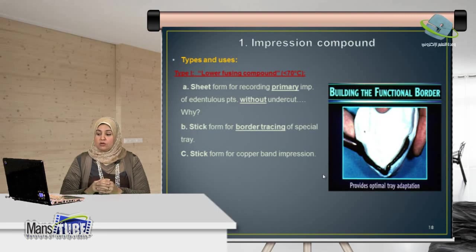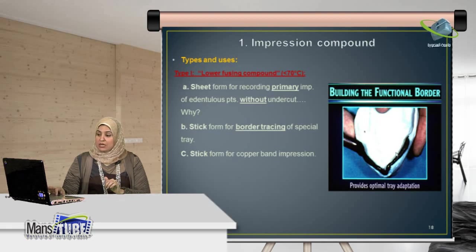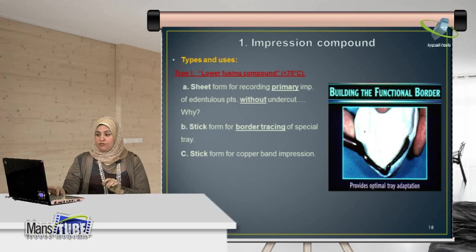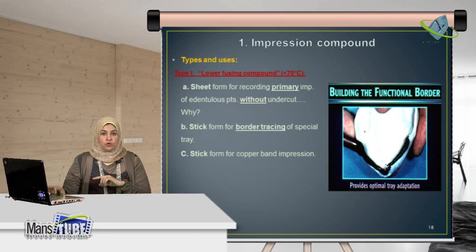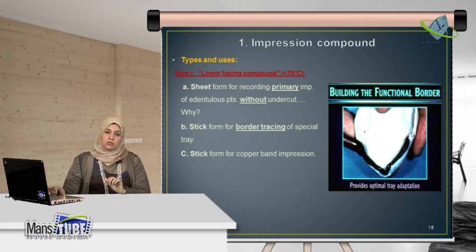The second use is for the stick form, which is used for border tracing. During taking an impression for a completely edentulous patient, we need to record the details of the oral sulcus. We heat the sticks until they become soft, then place them on the borders of the tray and press them against the oral tissues to record the details of the sulcus. This is very important during making a complete denture for the patient.